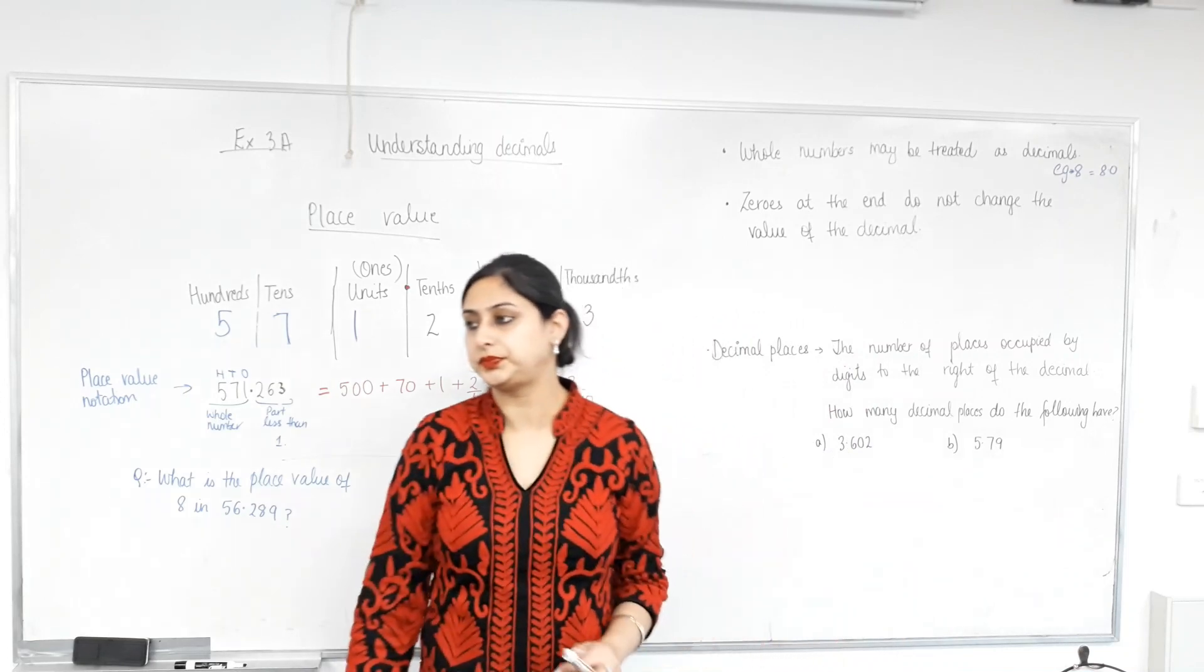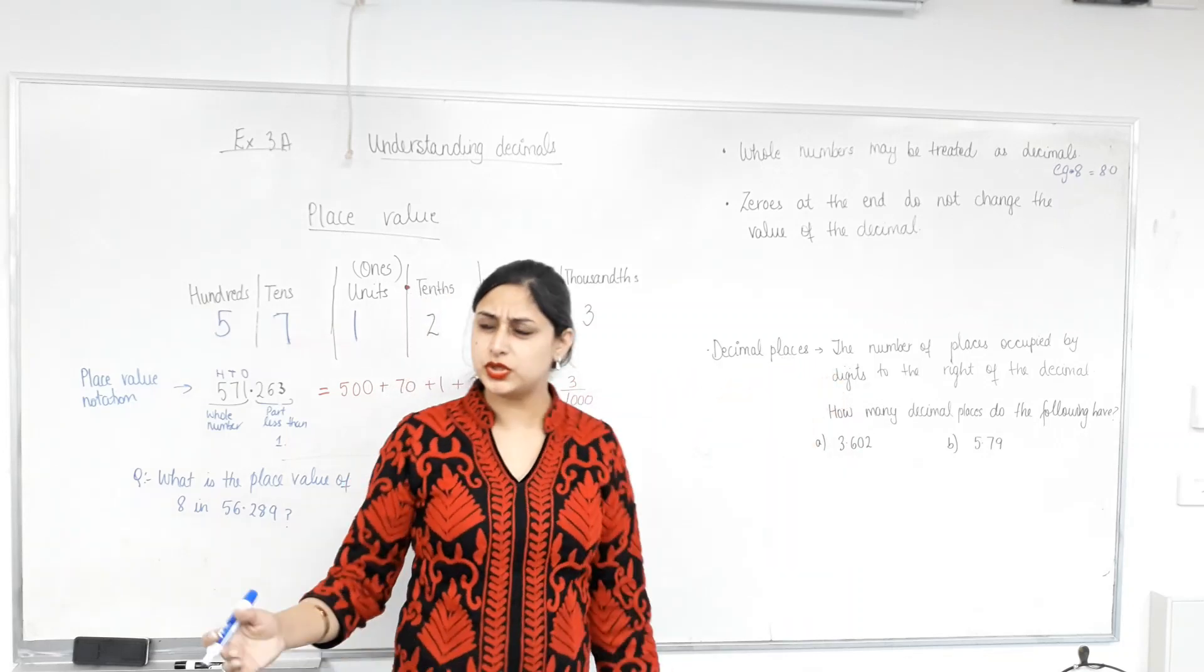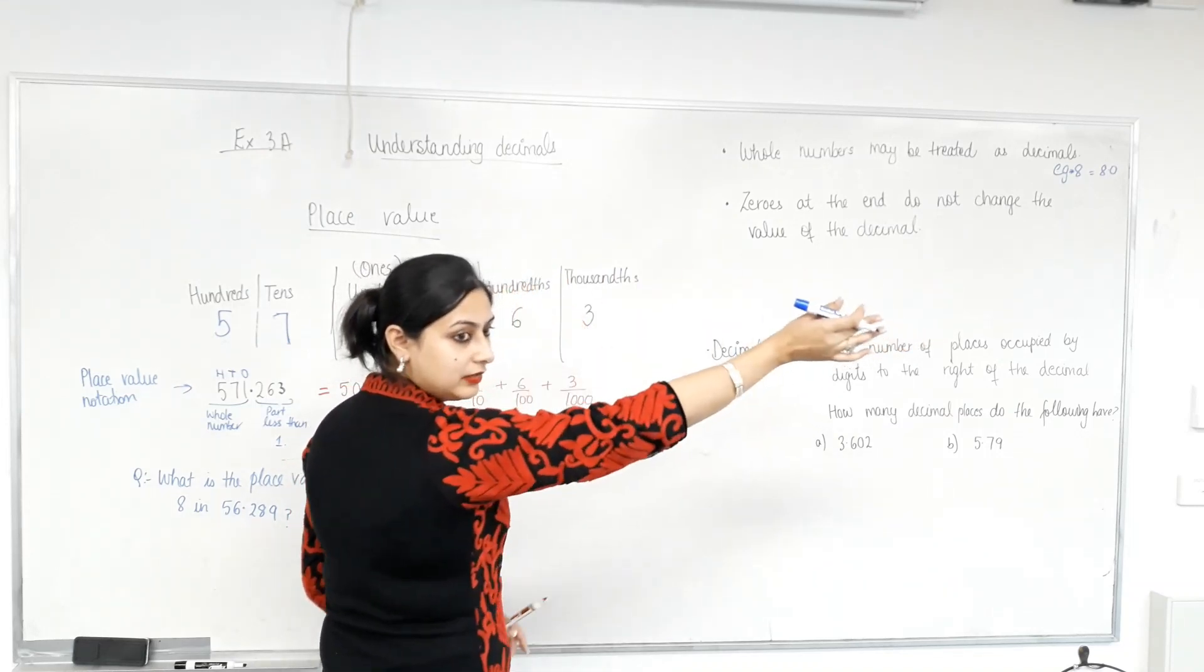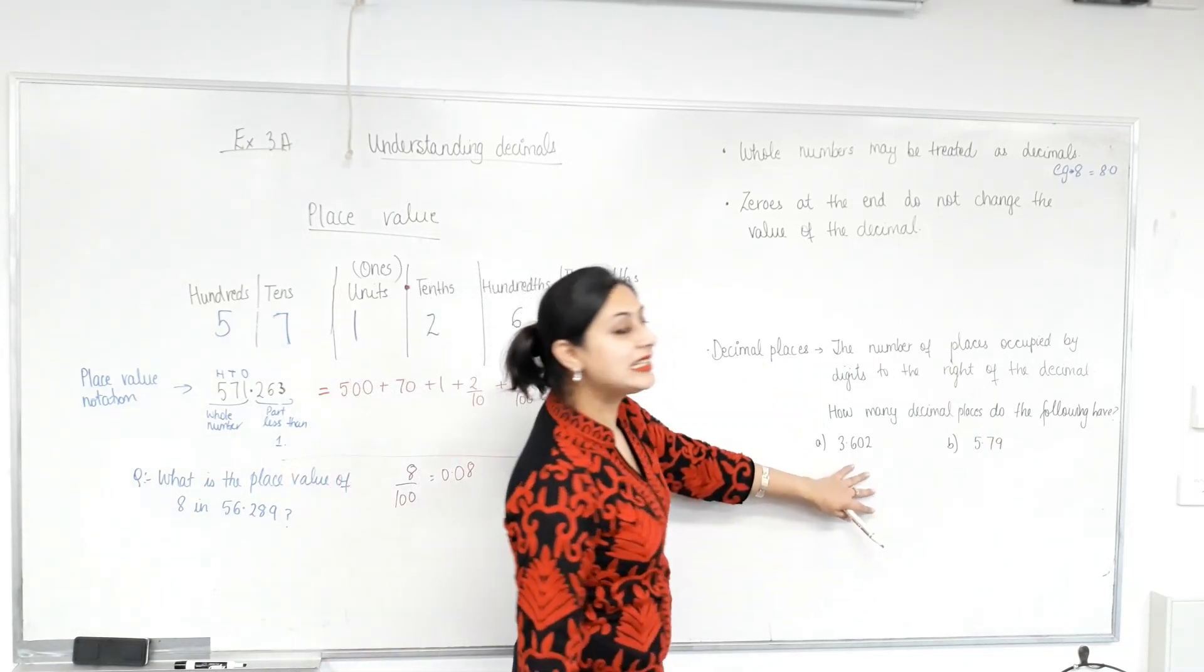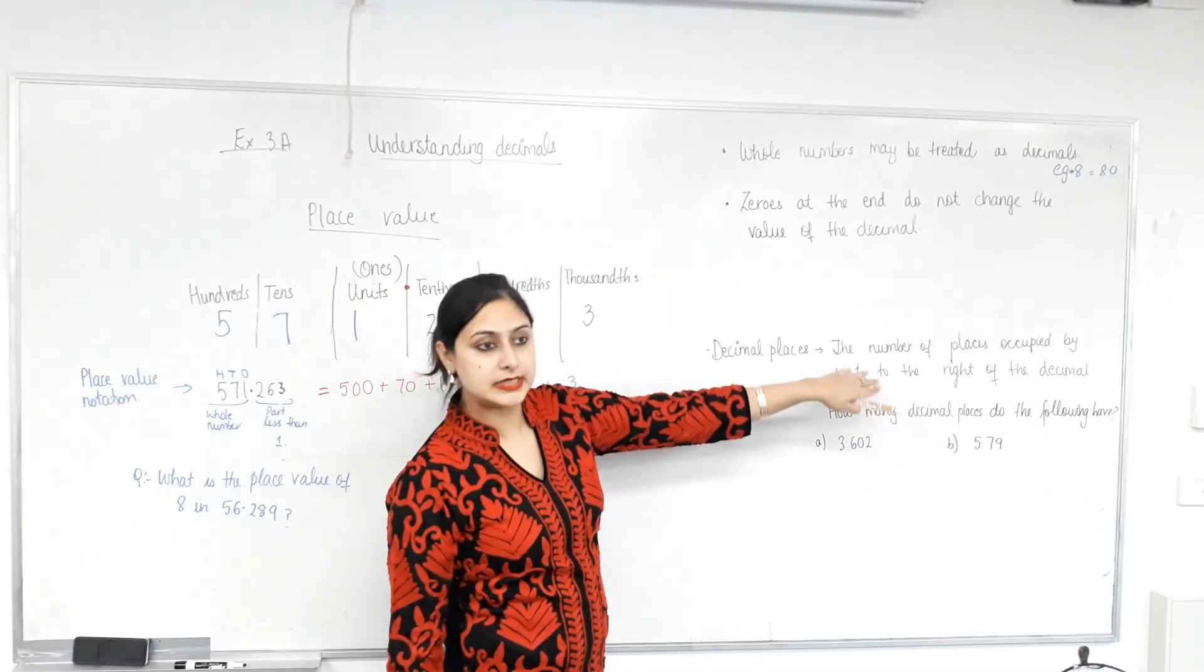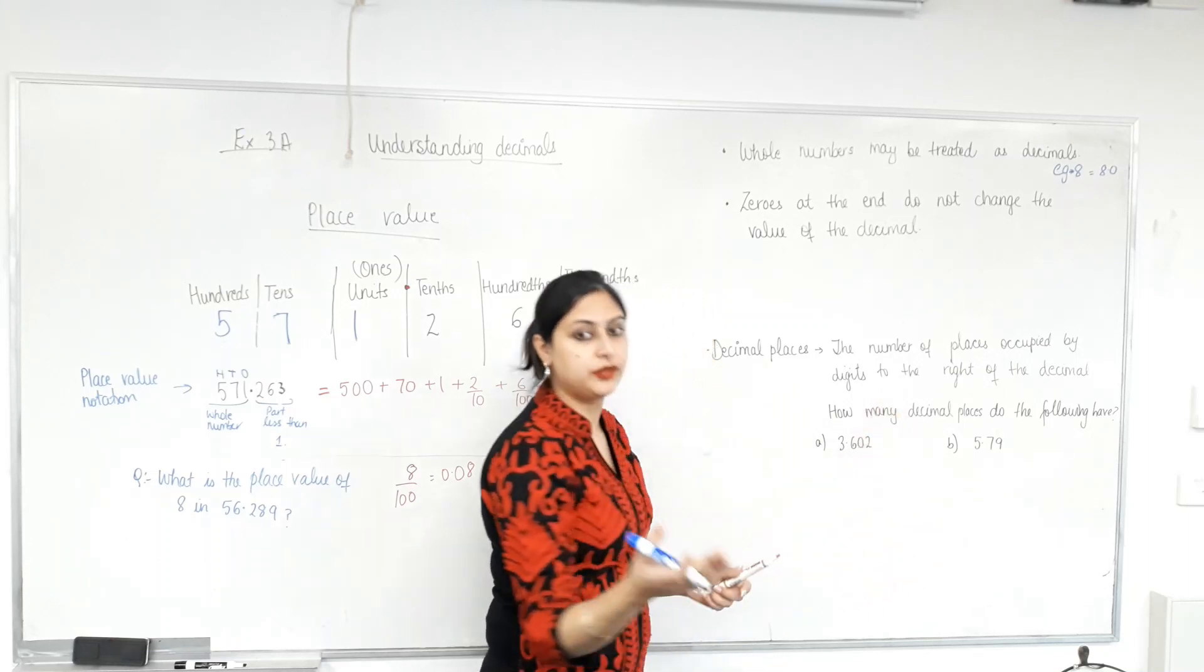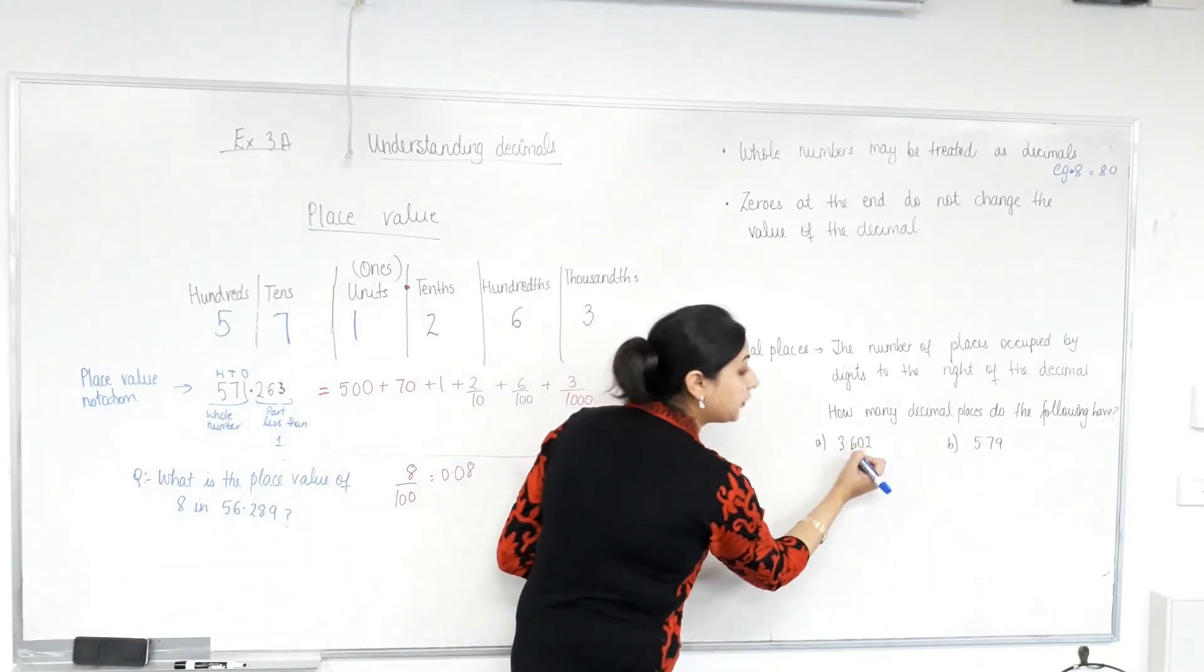Let's talk about the decimal places. The number of places occupied by the digits to the right of the decimal. Everyone knows which way is the right? Yes. Now, right. Good luck. How many decimal places are I writing off with it? With your left hand, some of you. How many decimal places do the following have? So, you only count the number of digits after the decimal. If you get confused between left and right, after the decimal, so it should be fine. After the decimal.